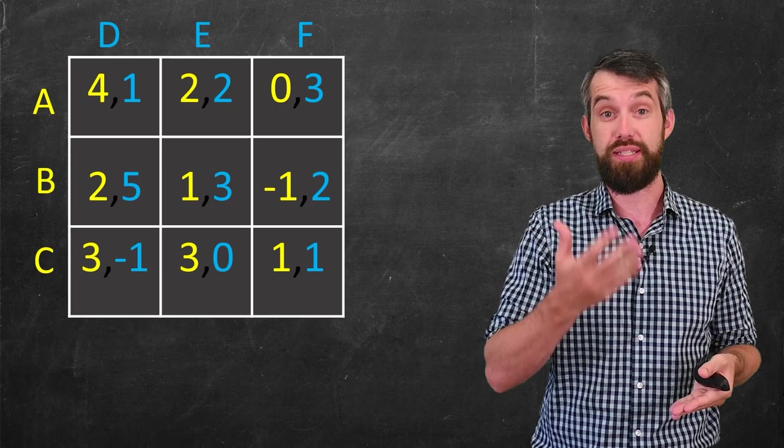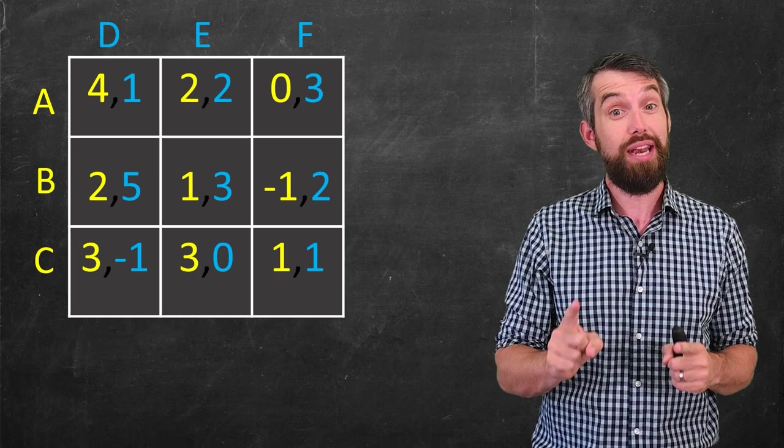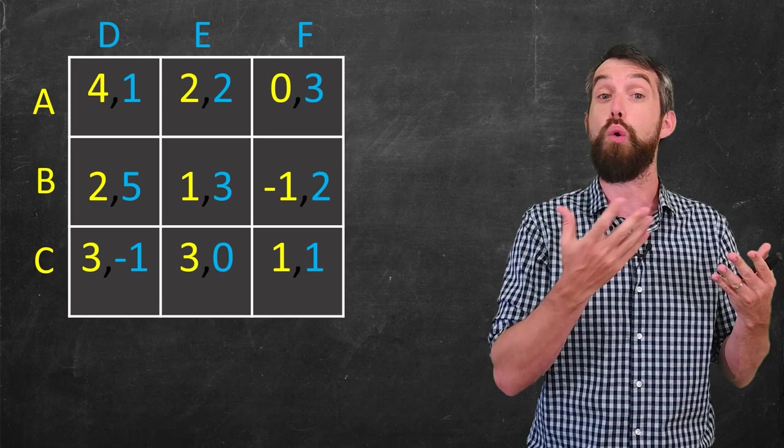And each of them have three options. Player one can play A, B, C. Player two can play D, E, or F. But which should they play? Now, if you want to pause the video, you can analyze for yourself and try to see, does any of these players have any dominating or dominated strategies?